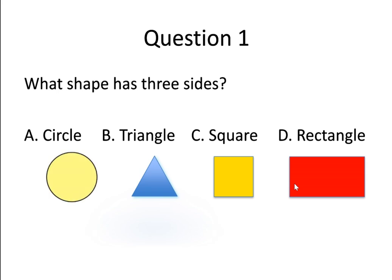Question number 1. What shape has three sides? Option A, circle. Option B, triangle. Option C, square. And option D, rectangle. You have got 5 seconds to answer this question.